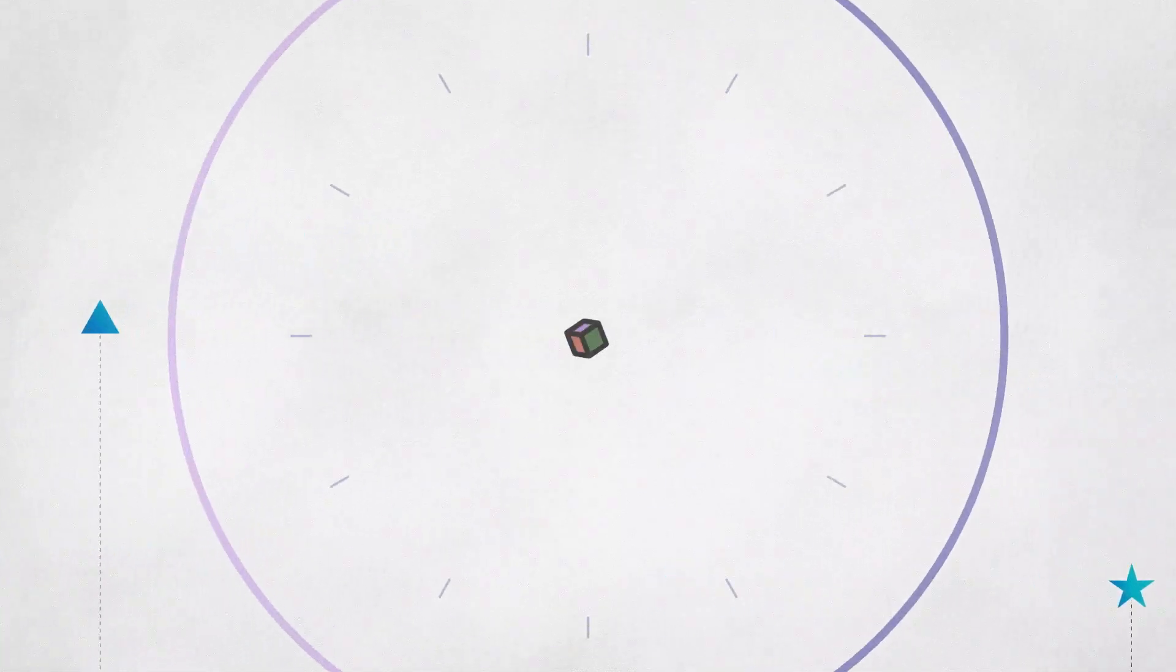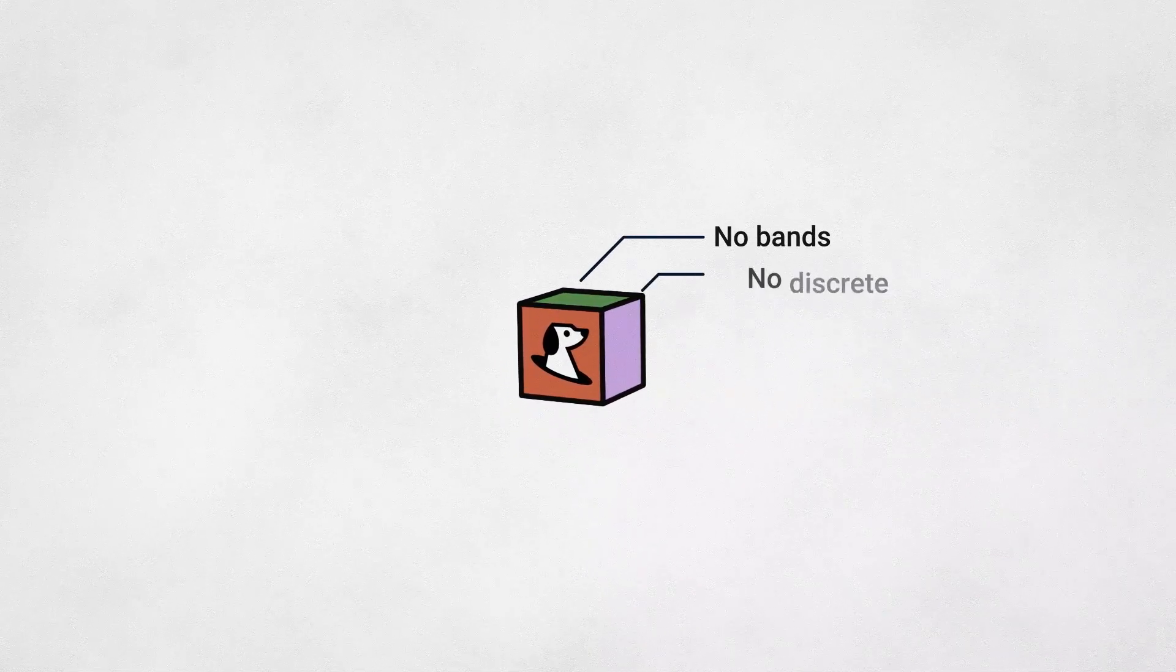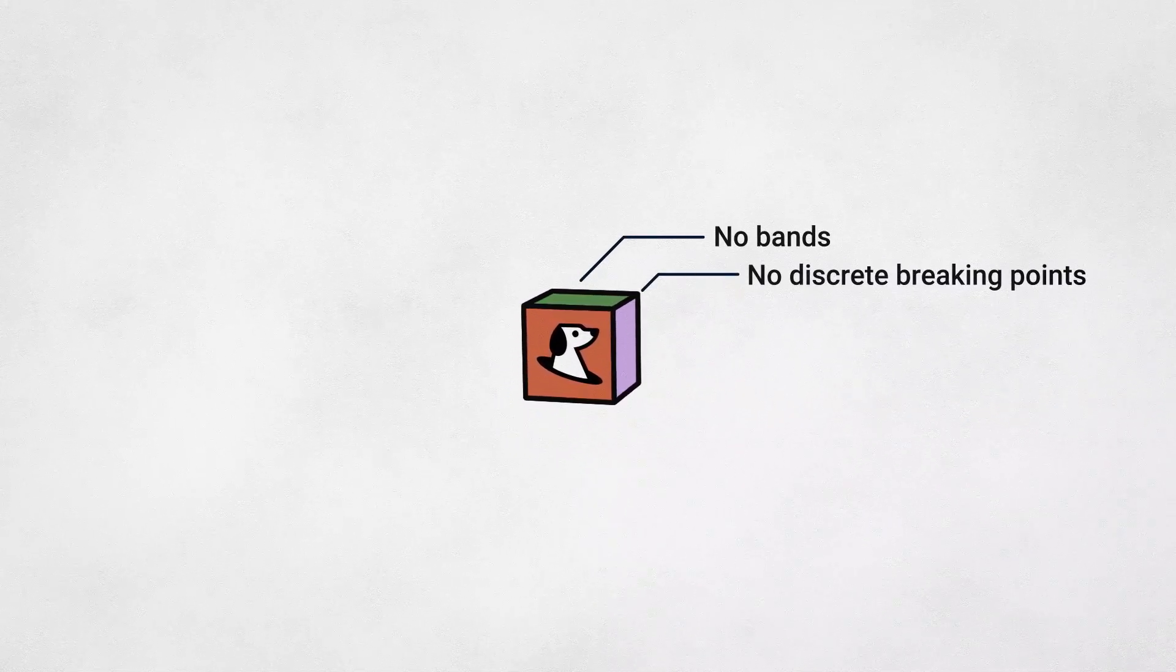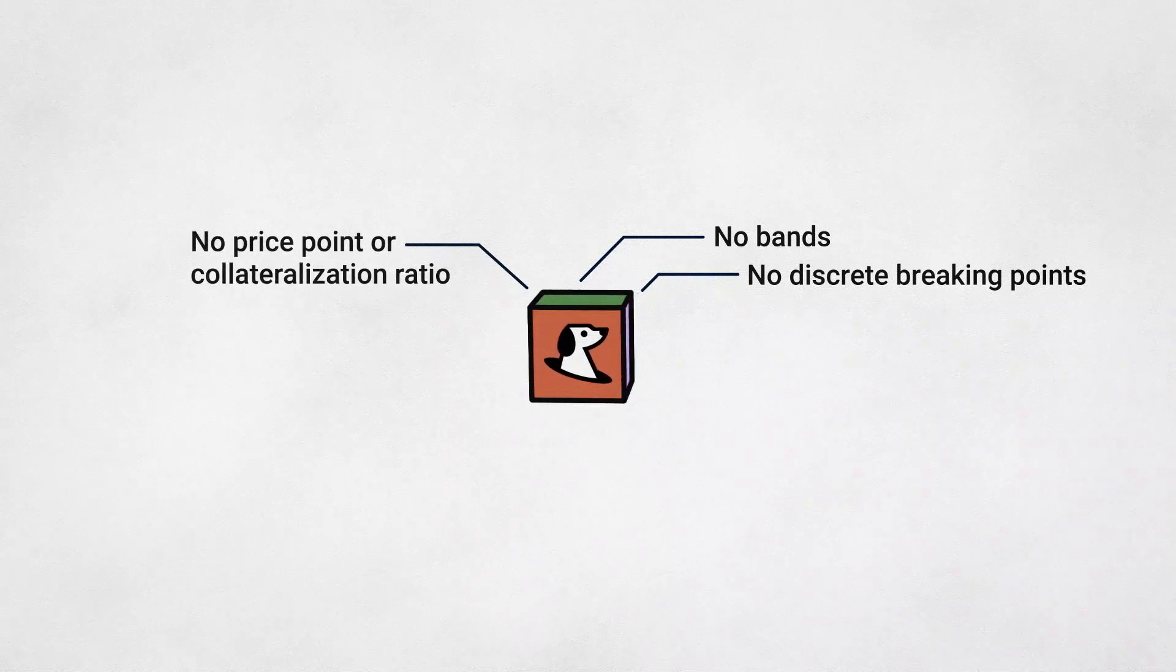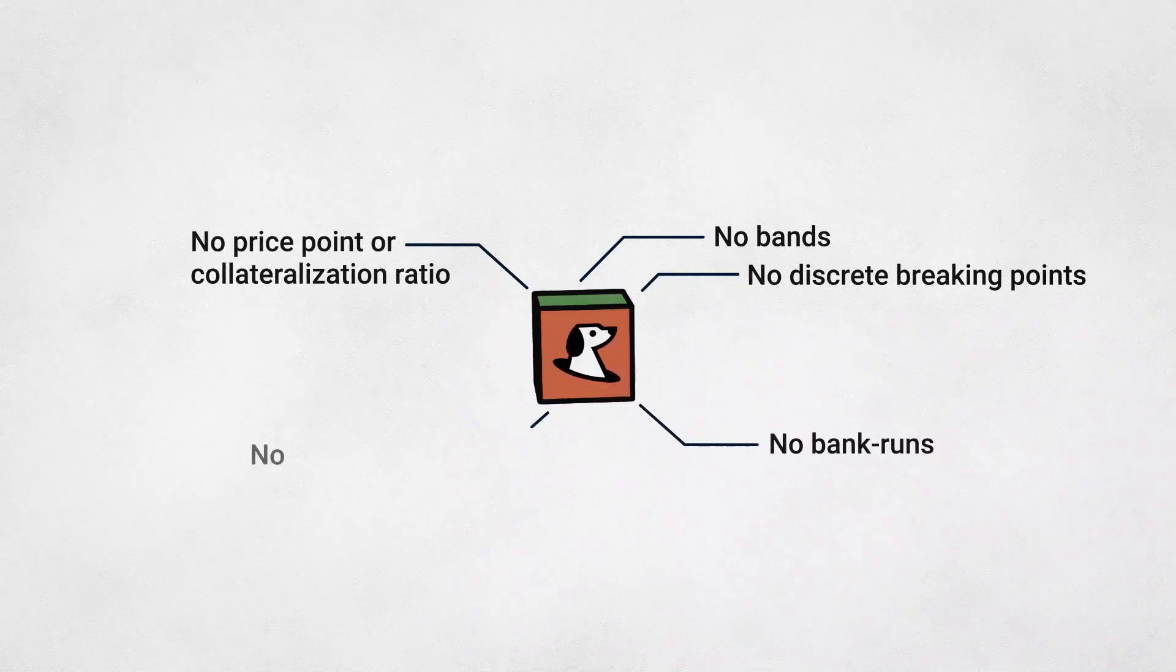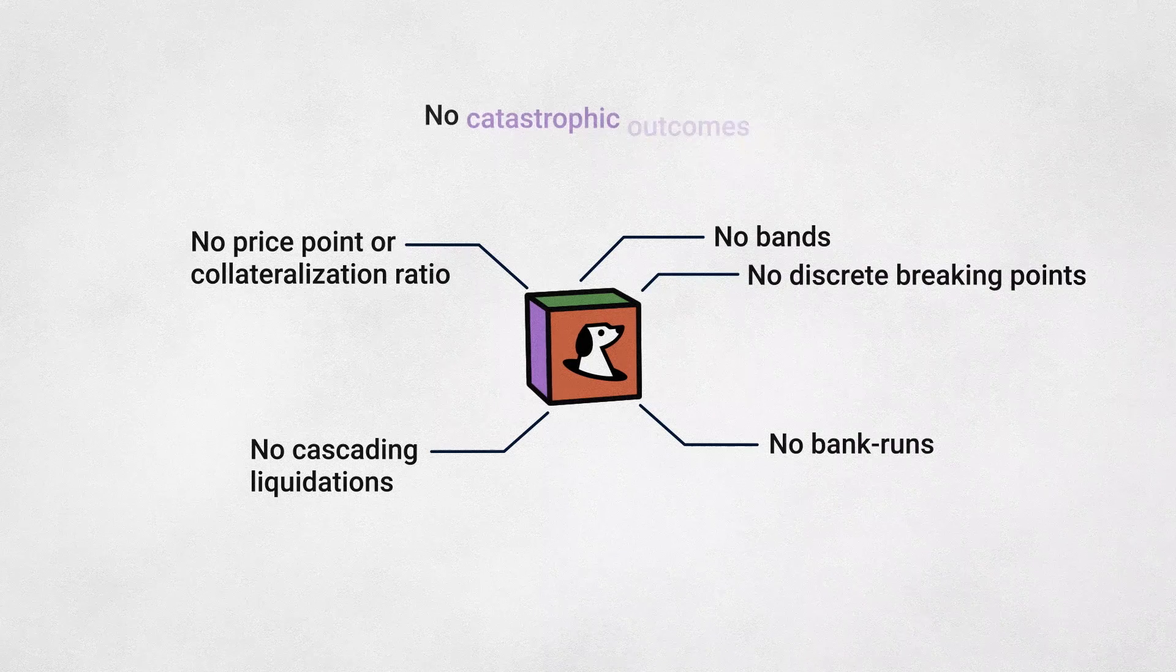What's special about the SPOT protocol is that it's continuous rather than discrete. This means there are no bands and there are no discrete breaking points in the system. No price point or collateralization ratio can trigger bank runs, cascading liquidations, or other catastrophic outcomes.